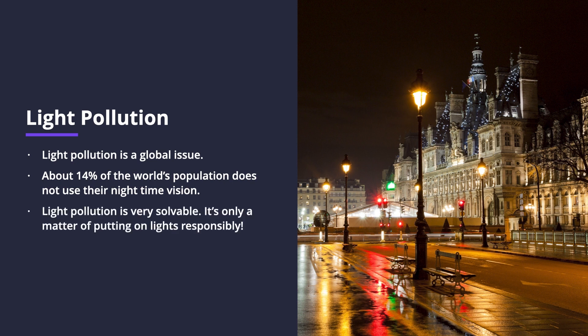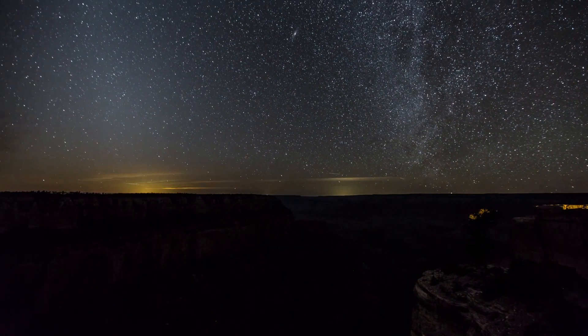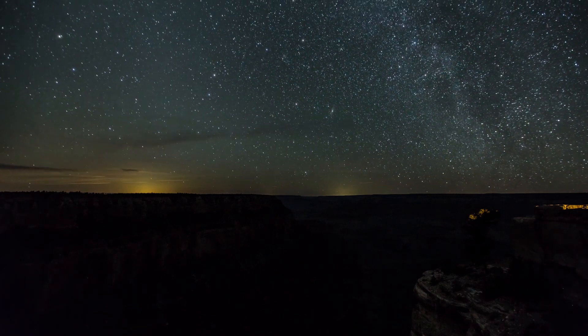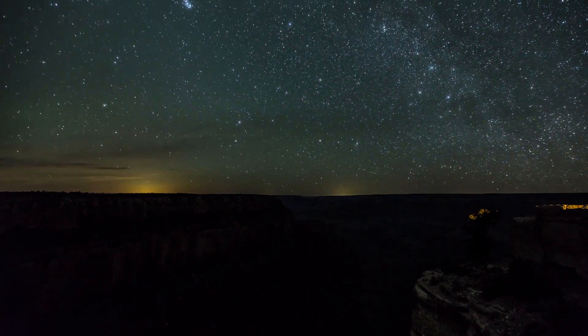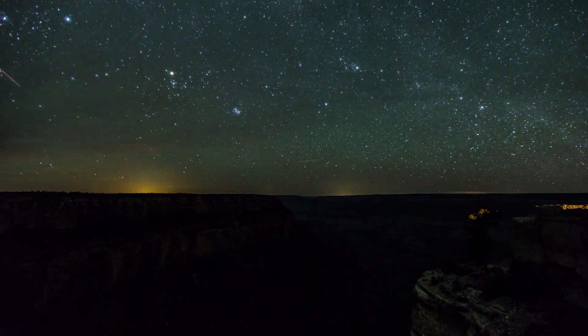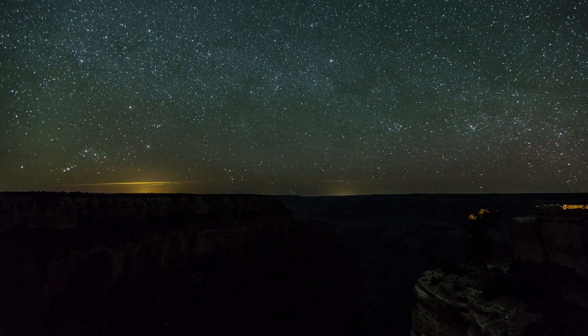Light pollution is very solvable — it's just a matter of putting on lights responsibly. Now that we have covered the different types of light pollution, let's move on to the implications of light pollution and how it impacts human health, wildlife, ecosystems, the environment, and the night sky.